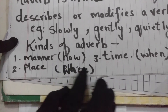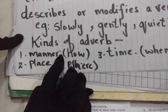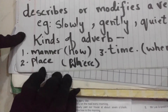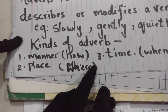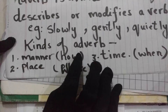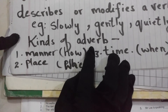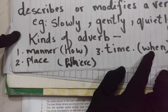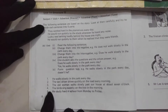Here we have three examples — three kinds of adverbs. Adverbs of manner: if there is an action, how is it done? Adverbs of place: where did the action happen? Adverbs of time: when did the action happen? So: how, where, and when.